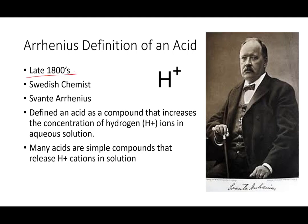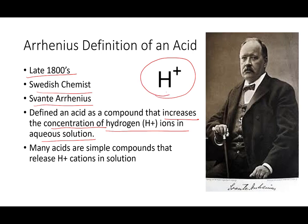In the late 1800s, there was a Swedish chemist — I apologize for my pronunciation — I believe the pronunciation is Svante Arrhenius. Arrhenius's definition of an acid was: an acid is a compound that increases the concentration of hydrogen ions in an aqueous solution. So the Arrhenius definition of an acid is something that makes more hydrogen ions in solution. Many acids are simple compounds that just release hydrogen cations in a solution.